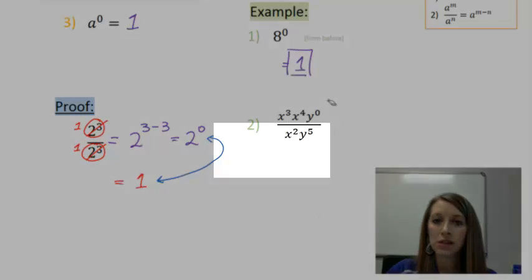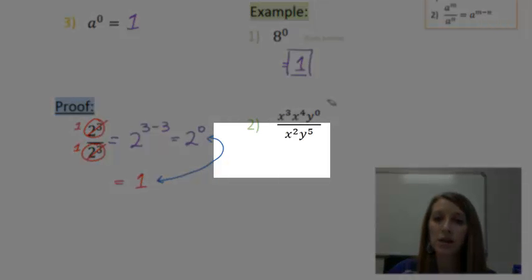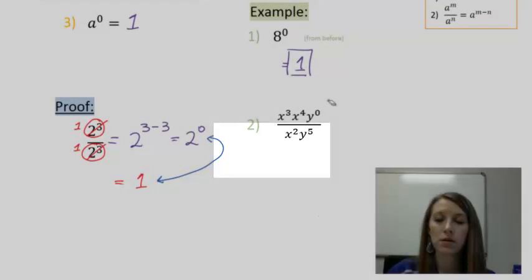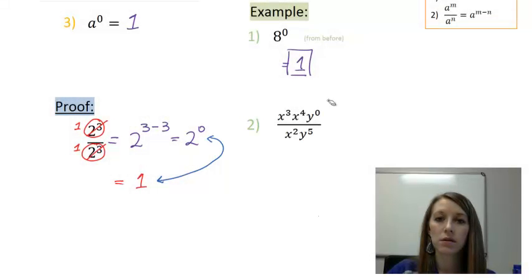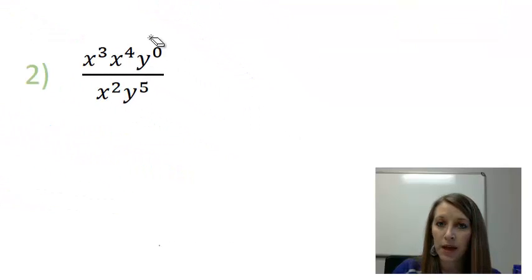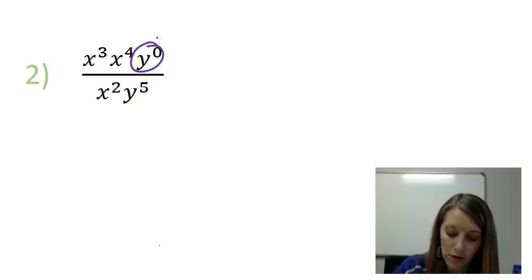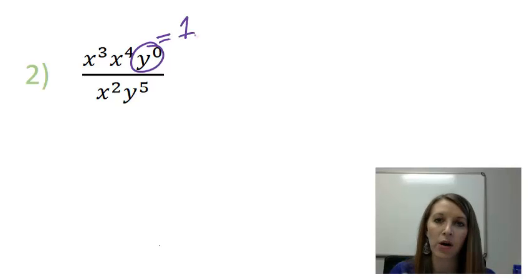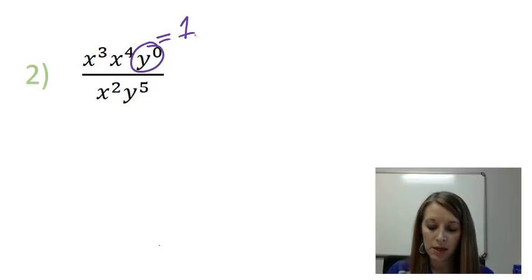So in example 2, I suggest that you pause the video and see if you can put all of these properties together to get the right answer. Okay, the first thing that I'm going to start with is y to the zero power. That's probably going to be the first thing that you pick out because that was the last thing that we talked about. So of course anything to the zero power is 1. That's the easy part.